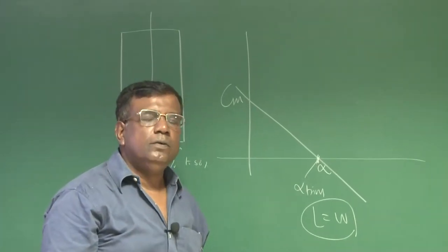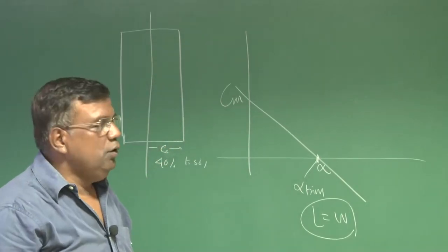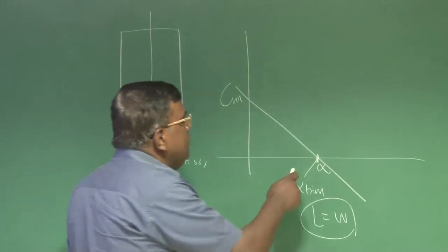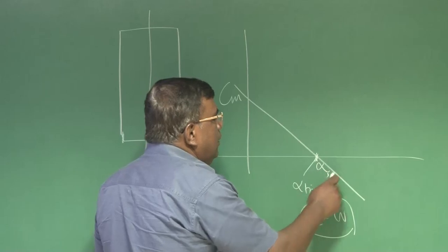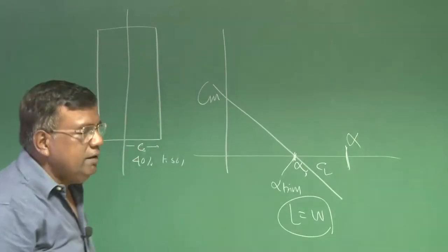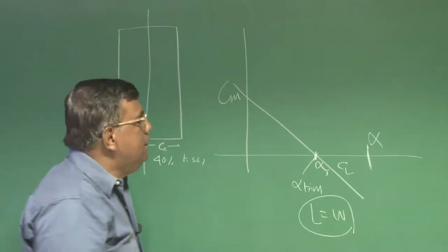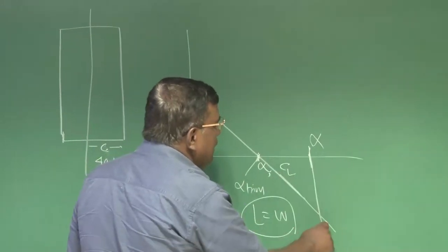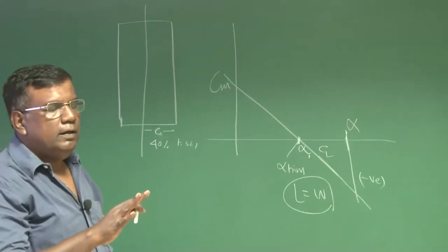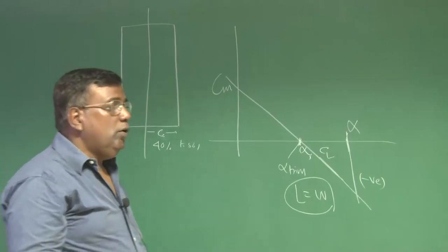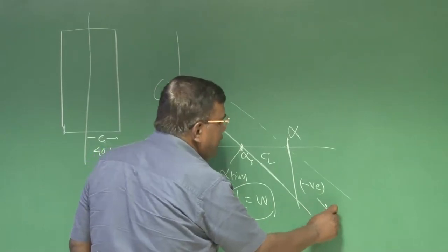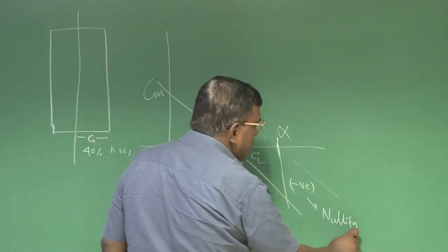But if I am flying at this alpha or corresponding Cl, and want to fly at a different alpha or Cl while maintaining level flight, the aircraft being statically stable will automatically oppose it and generate negative pitching moment. If you want to increase alpha, it will automatically generate negative pitching moment. So somehow you have to nullify this moment.